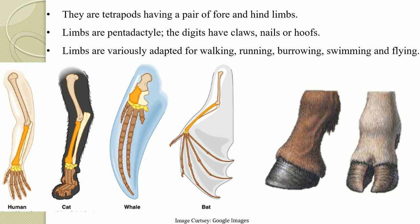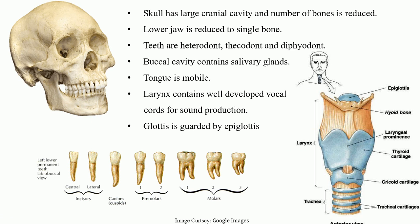The skull has a large cranial cavity — here you can see the skull of a human. It has a large cranial cavity which encloses the brain. The brain is always well developed among all mammals, and the number of bones in the skull is greatly reduced. The lower jaw is reduced to a single bone. Here you can see the condyle by which the lower jaw attaches to the main region of the skull — a characteristic feature found in the skull of all mammals.